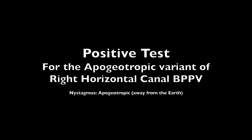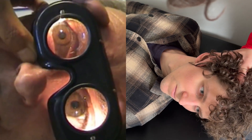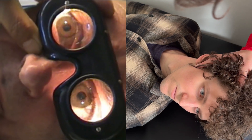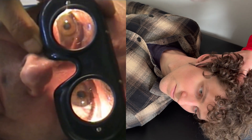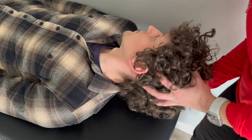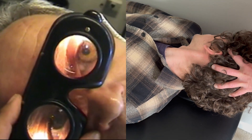Demonstrated here is a positive test for the right horizontal canal BPPV apogeotropic variant. Apogeotropic nystagmus will demonstrate intense horizontal nystagmus away from the earth when the head is rotated away from the affected side. When the physical therapist rotates the patient's head towards the affected side, the nystagmus should be horizontally away from the earth with less intensity.